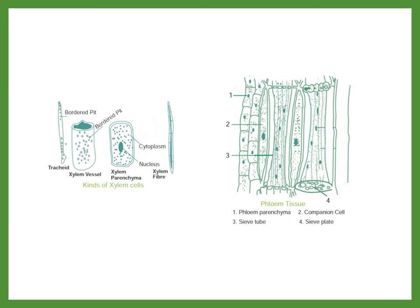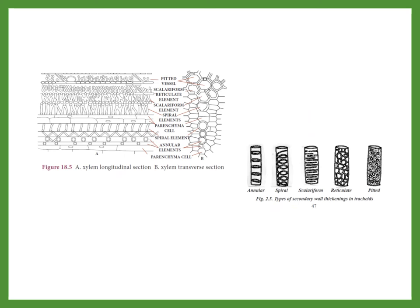Here this one is the phloem, formed of sieve tube, companion cell, phloem parenchyma and phloem fibers. The label four is the sieve plate, acting as a sieve. In phloem, companion cell is the only living tissue with the nucleus. Whereas sieve tube will not have nucleus. Xylem conducts water and minerals from the root to the upper part of the plant. Whereas phloem conducts food material from the leaves to different parts of the plant.